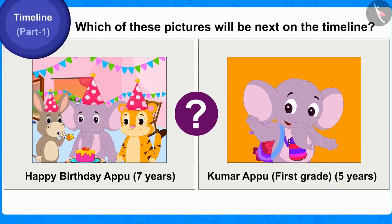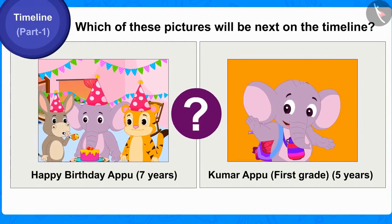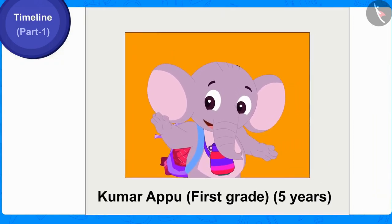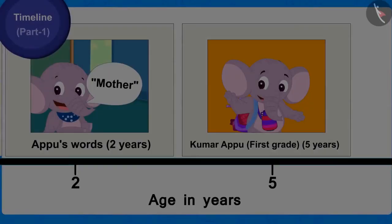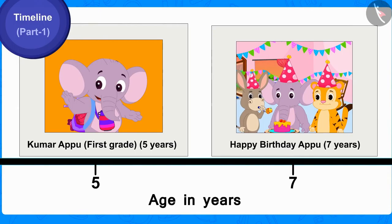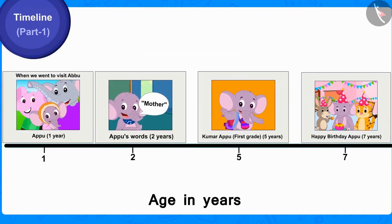And which of these pictures will be next on the timeline? Yes, this picture of Appu, in which Appu was in first grade, will be shown chronologically next on the timeline by writing the age of five years on it. And finally, the picture of Appu's seventh birthday will be shown by writing the age of seven years on the timeline. In this way, Appu's timeline is ready.